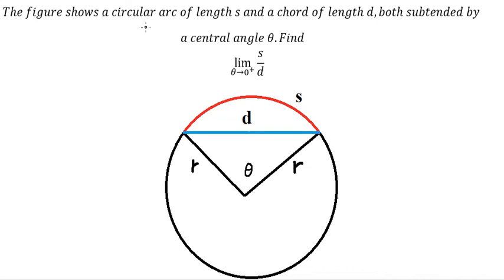Hello everybody, today I want to talk about calculus. The topic today is about limits. I want to show you how to answer this problem: the figure shows a circular arc of length h and a chord of length d, both subtended by a central angle theta.